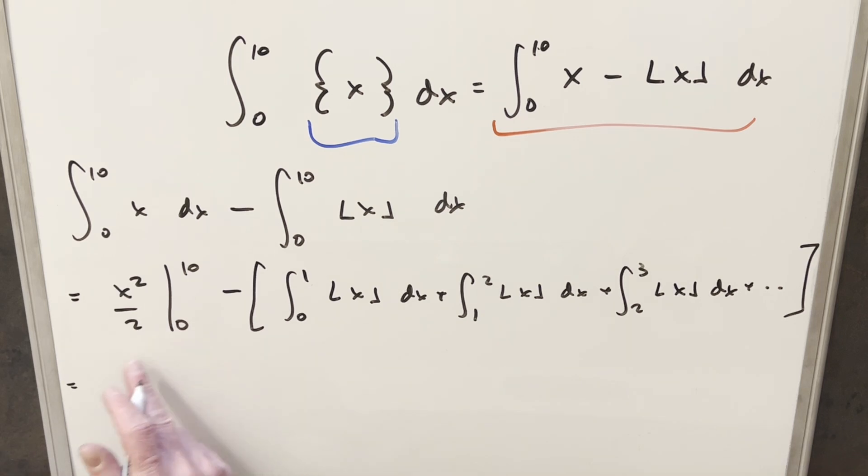But now back to this first piece, we can just evaluate this. When we plug in 0, that's going to be nothing. So we plug in 10, we get 10 squared, which is 100 over 2. This first piece is just 50. Now for all this stuff over here, each one of these is going to reduce. Like between 0 and 1, the floor is going to round us down to the next highest integer. So that's just going to become a 0 right there.